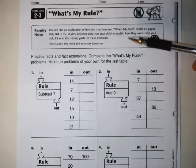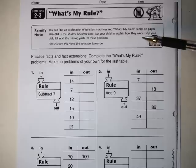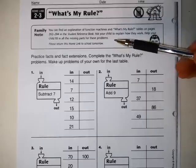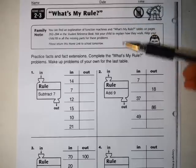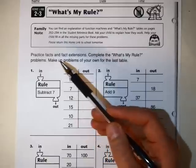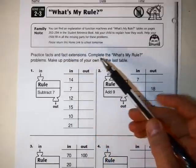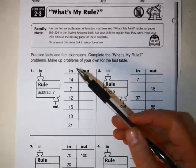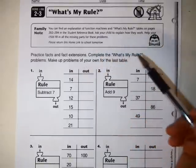Ask your child to explain how they work. It's good if you explain things to people who are helping you because that helps you understand it better too. And help your child fill in all the missing parts for these problems. So I want you to pay attention guys, so you know how to do this. It says practice facts and fact extensions. Complete the What's My Rule problems. Make up problems of your own for the last table.